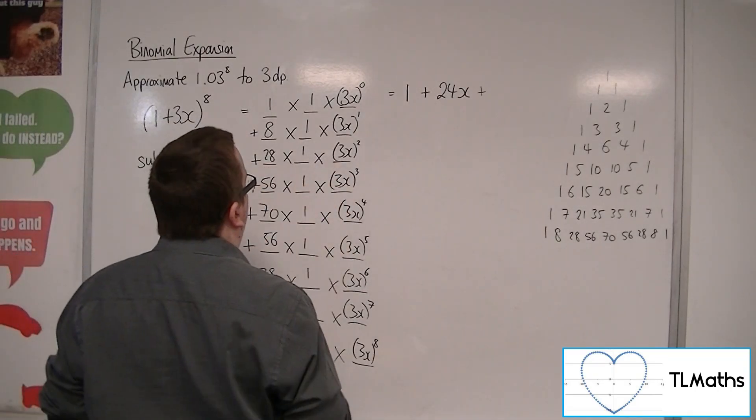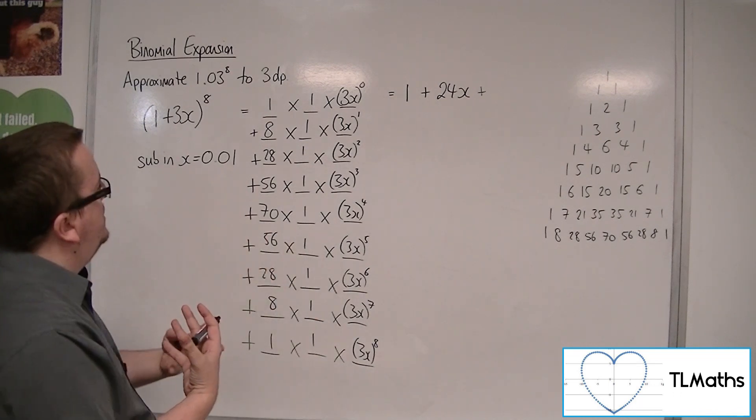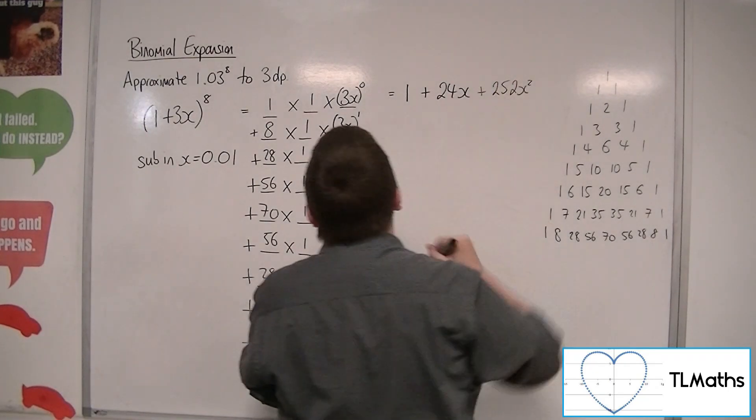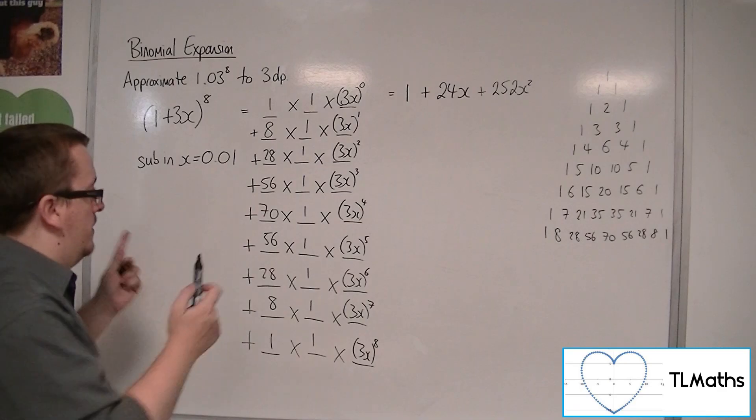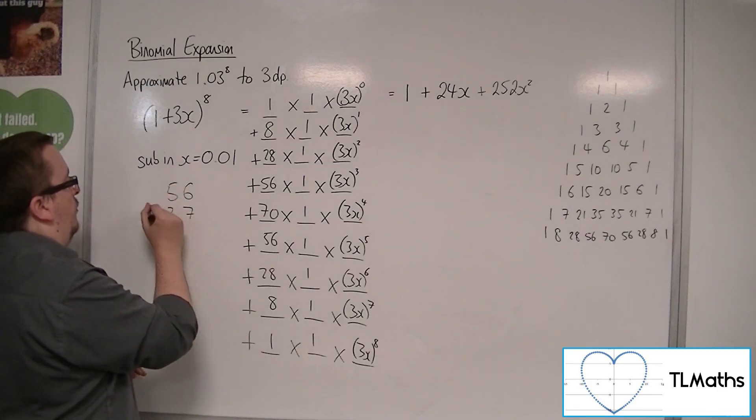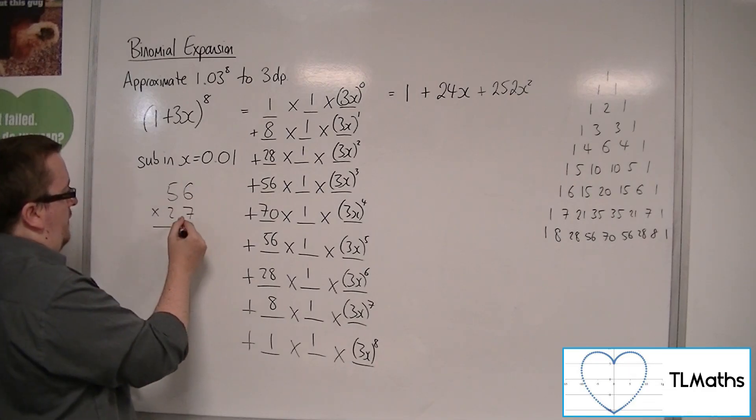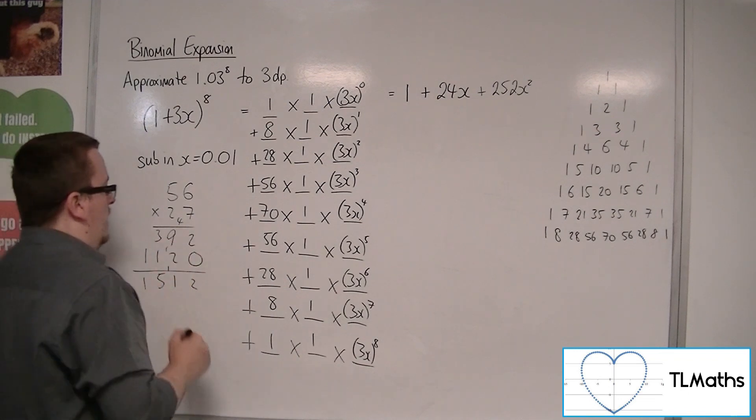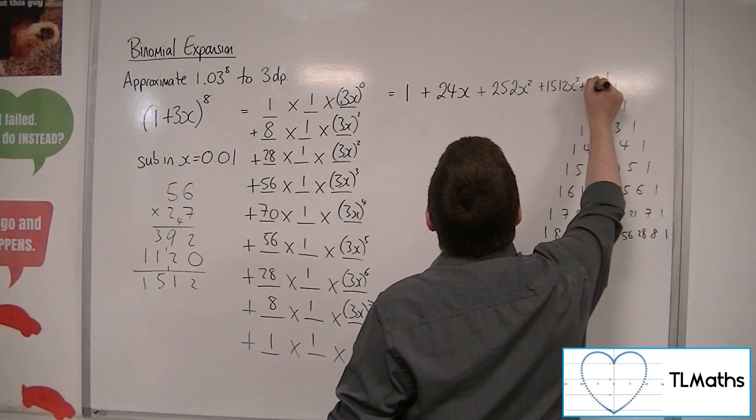Now, here we've got 28 times 9. So that's 280 take away 28. So that's 260. So that's 252. 252x squared. Then we've got 56 times 27. Going to have to use a bit of long multiplication here. 42, 5, 7 is a 35, 39, 0, 2, 6 is a 12, 2, 5 is a 10, 11, 2, 11, 2, 5, 1. 1, 5, 1, 2, x cubed and other stuff.